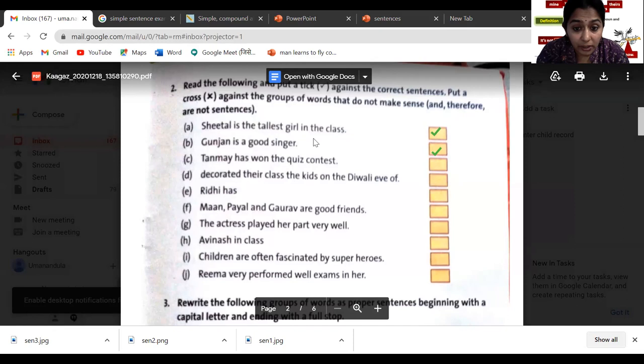'Decorated their class the kids on the Diwali involved' - does it make any sense children? No. So it cannot be a correct sentence. You have to put a cross over there. 'And Hrithi has' - this also has no meaning, so this cannot be a sentence. 'Payal and Gauru are good friends' - this makes sense. 'The actress played her part very well' - correct.